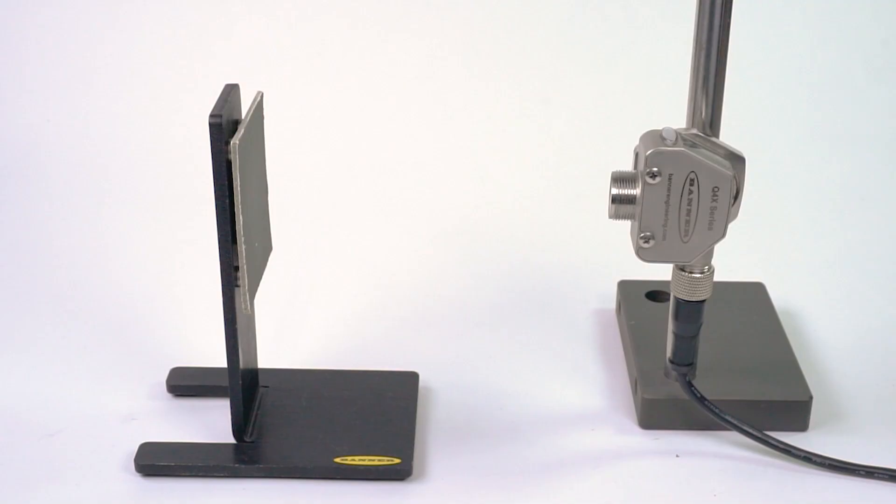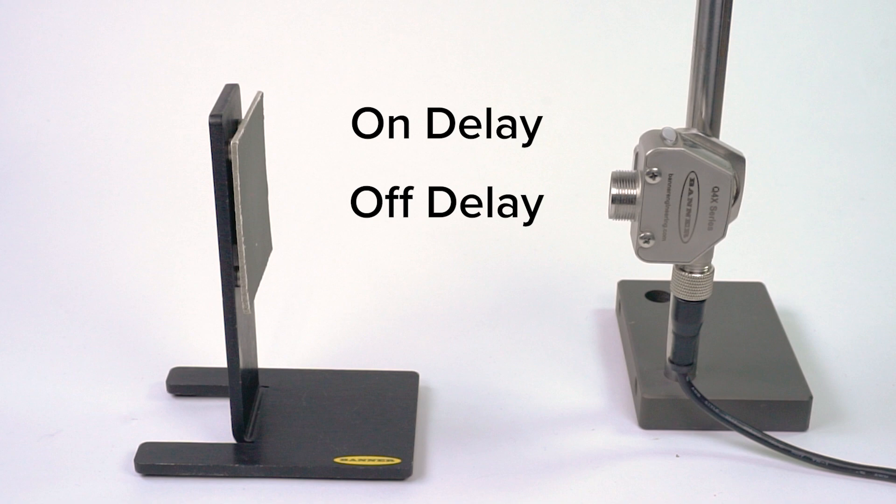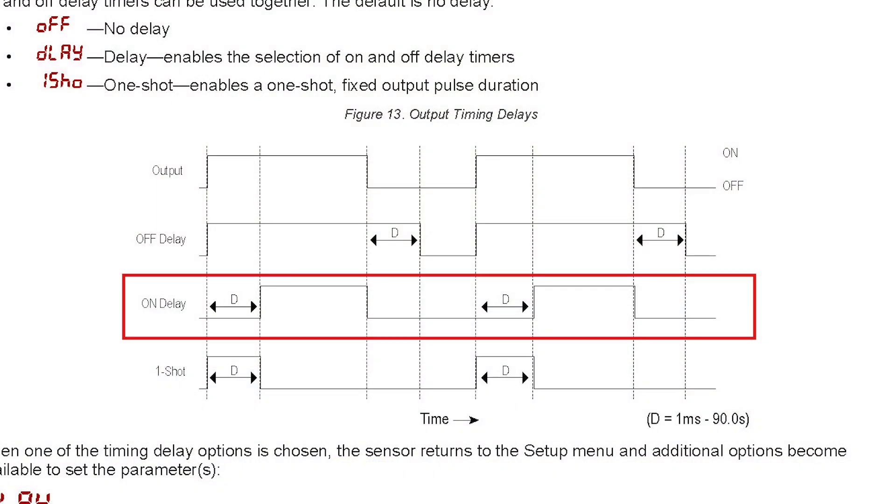The available delay modes include an on-delay, an off-delay, and one-shot logic. An on-delay requires the target object to be within the detection range for a set amount of time before the output signal will turn on.